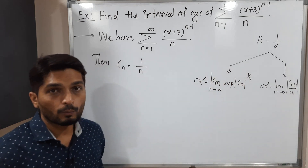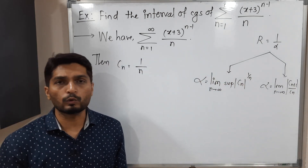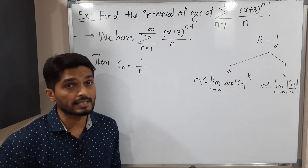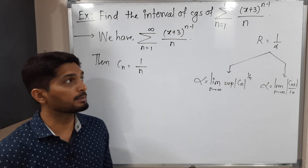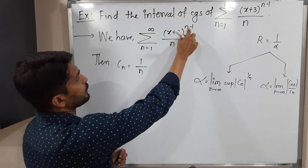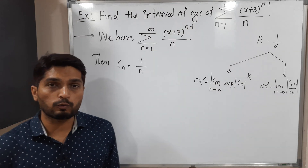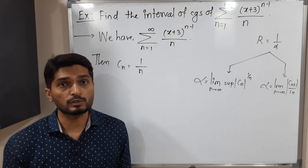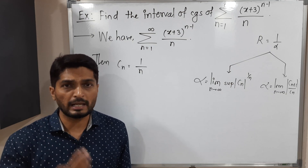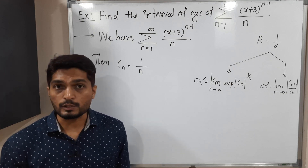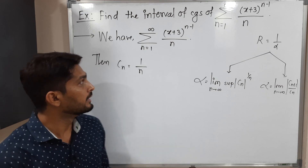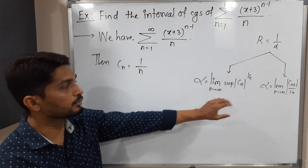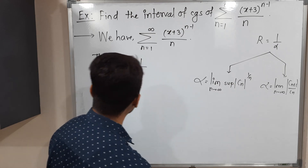When we have the standard power n, we generally go for the first formula; otherwise we go for the second formula. If you have a non-standard power such as n minus 1, n plus 1, or n minus 2, we generally go for the first formula again. Here we have power n minus 1, so that is why I am using the first formula.